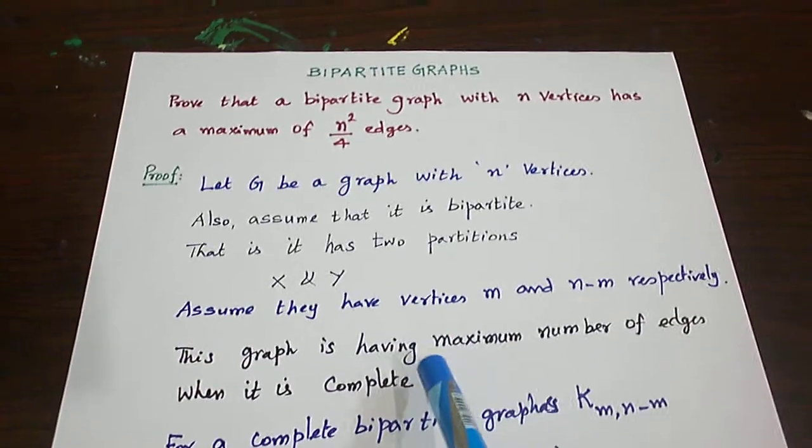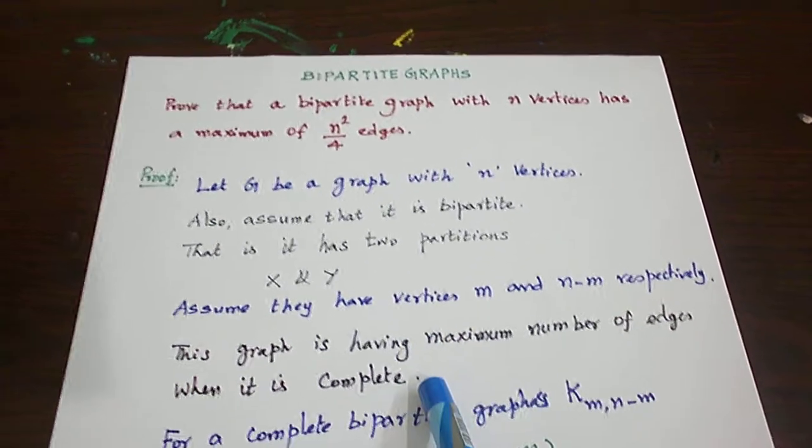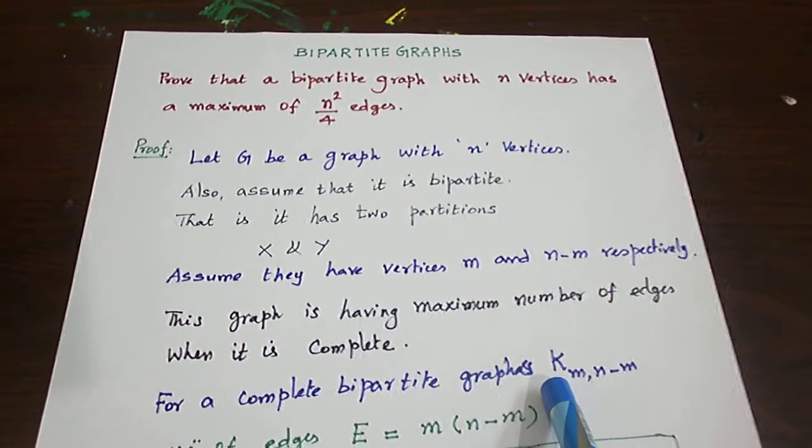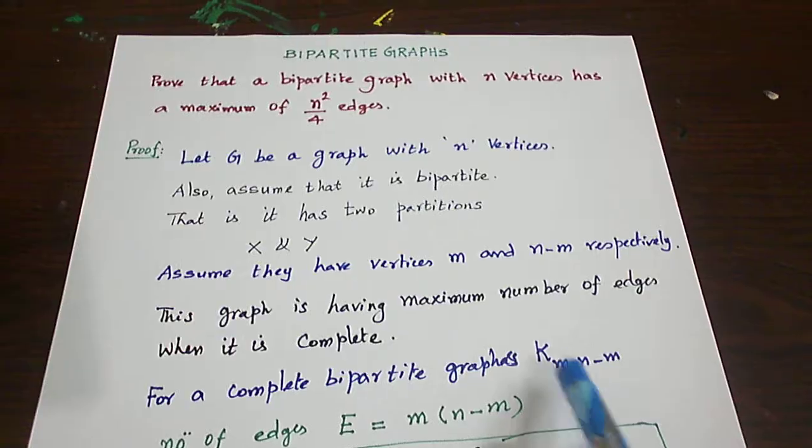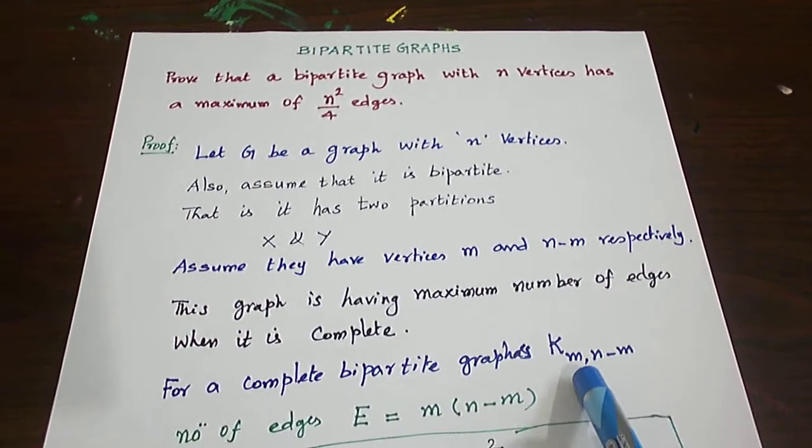Now this graph has maximum number of edges if it is complete. So when the bipartite graph is complete, we have a complete bipartite graph with m vertices and n minus m vertices in the partition.